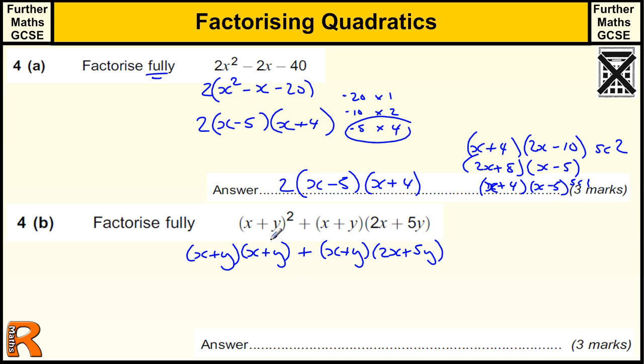So, when we do that, we can see that (x + y) is in both of these, so we can factorise out the (x + y) bracket before we start, and that leaves us with (x + y). Let's actually put an even bigger bracket, let's put a big square bracket in there. And then we've got this (2x + 5y) here.